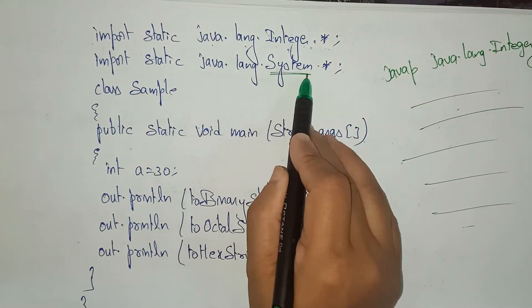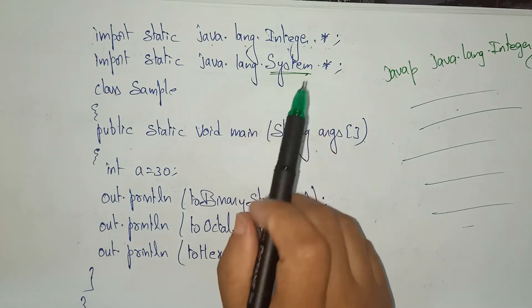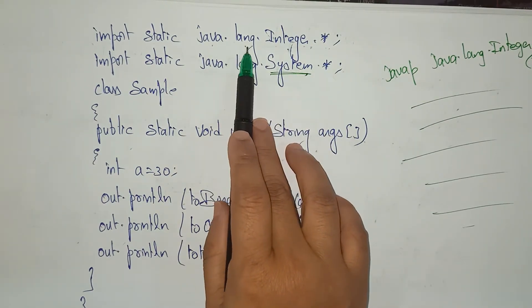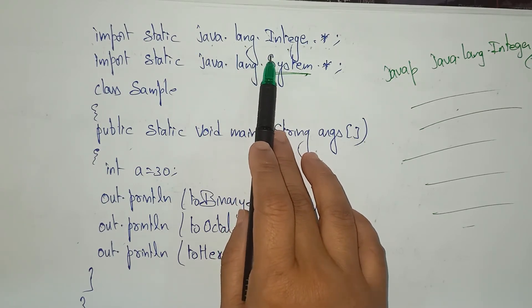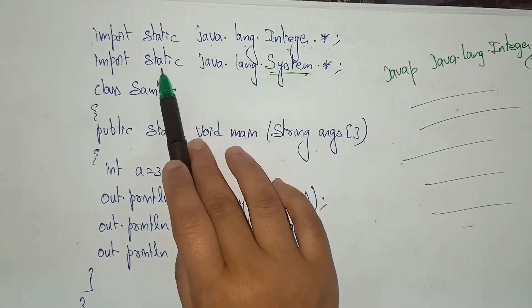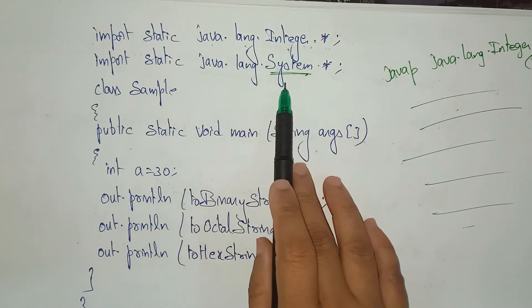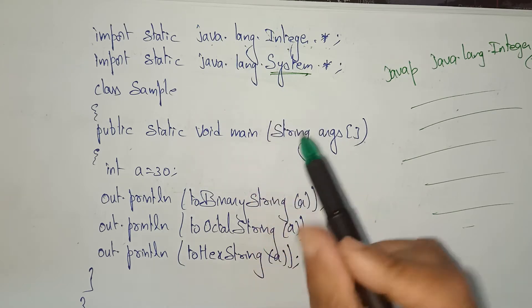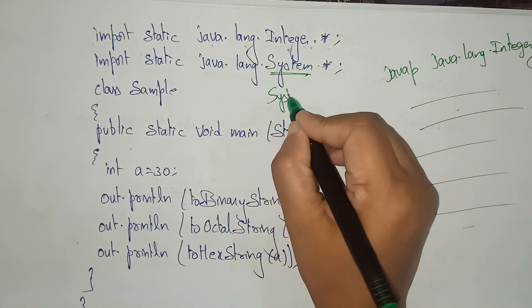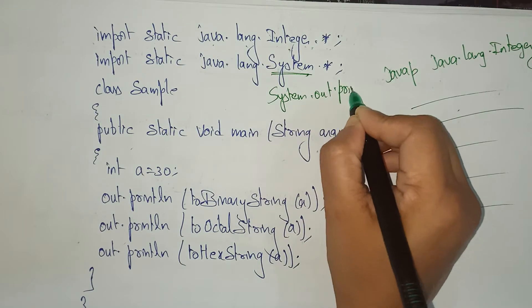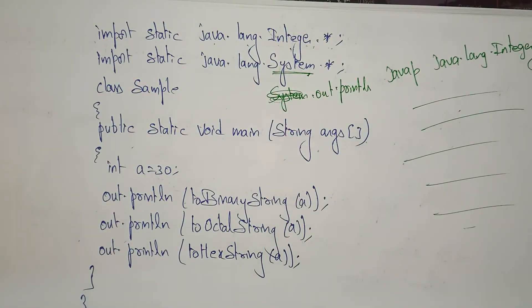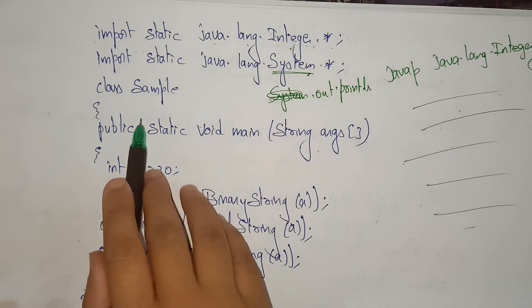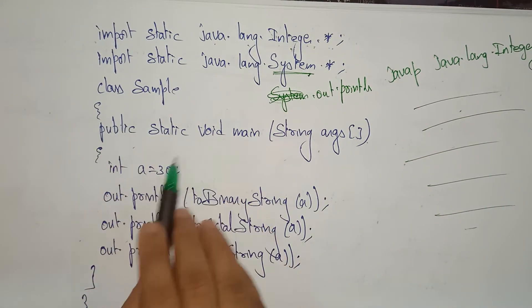Also import static java.lang.System.* — where System is the class name. If you include this, you don't need to write Integer dot or System dot. You are generally used to writing System.out.println, but you no longer need to mention System dot because you already imported it.